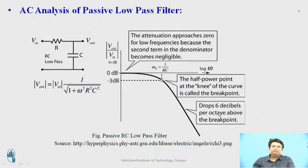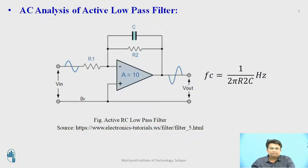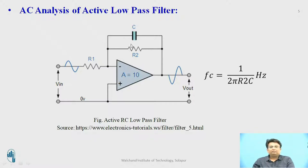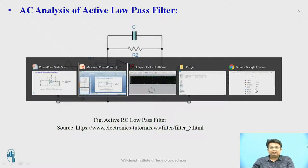Let us see the AC analysis of the active low pass filter. This is the active low pass filter — it consists of an op-amp circuit with the capacitor connected at the feedback. The cutoff frequency of this circuit is given by fc = 1 upon 2π R2 × C. Let us simulate this circuit in LTSPICE.